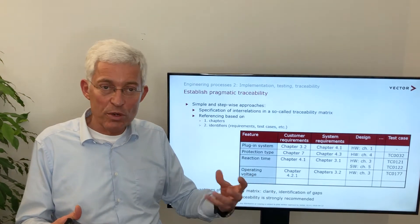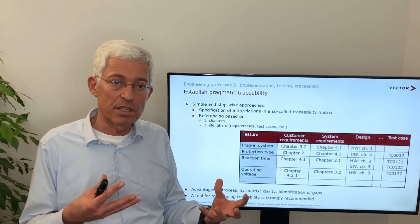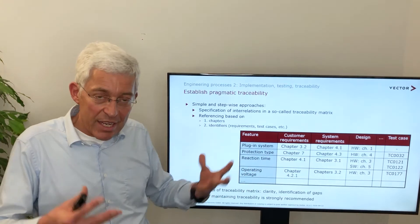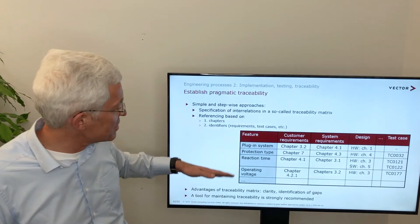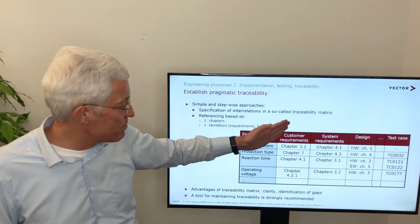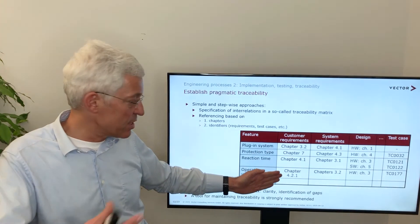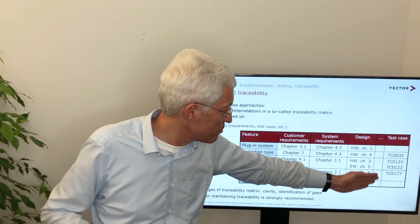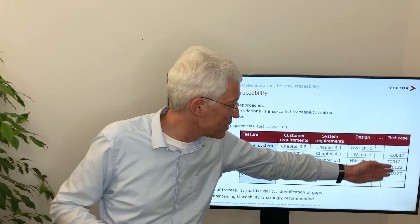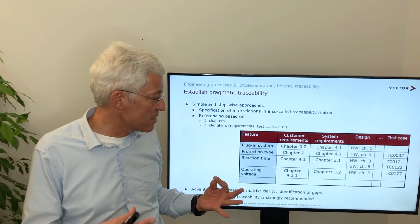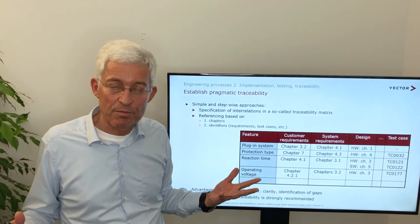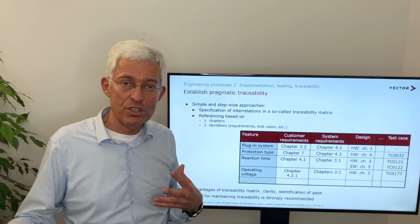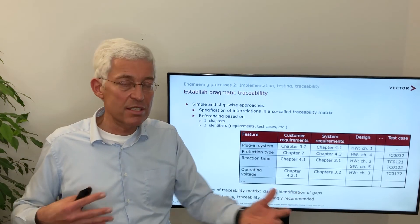From a perspective of pragmatism and efficiency, it's not only to have traceability but to have good enough traceability — not too much. We can imagine a simple Excel table: we have certain features and we map them to customer requirements, system requirements, design, maybe code or architecture, and the test cases. But we can see this will not scale. Take a several-hundred-requirements list, take two or three versions, and take ten variants — this will not work.